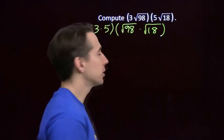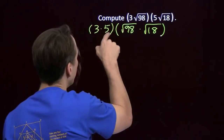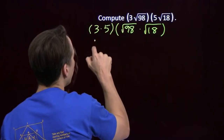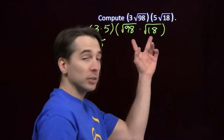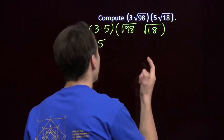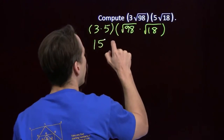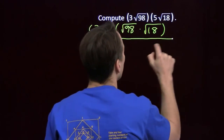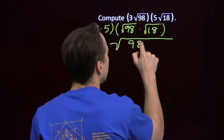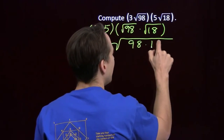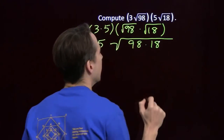We've got a product of square roots here, so the 3 times 5 is just 15. My product of square roots is the square root of the product — I can write this as the square root of 98 times 18.